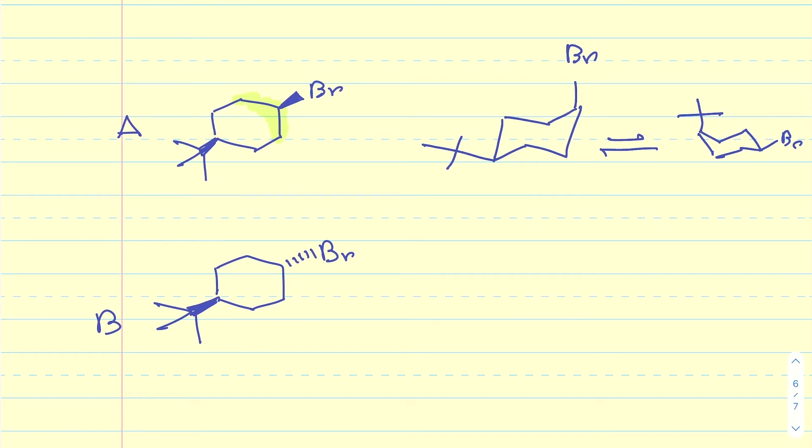So one of the chair conformations is going to have both bromine and t-butyl in the equatorial position. And the other is going to have both of them in the axial position.